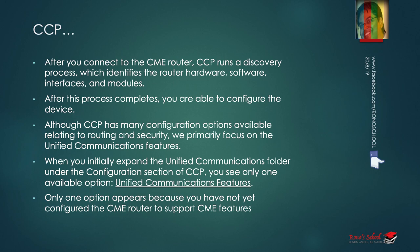Although CCP has many configuration options available relating to routing and security, the integrated GUI would not be able to do routing and switching configurations graphically. CCP will do routing and switching, but not telephony. Three differences: the integrated GUI via the TAR file is just for telephony — no ACL, no NAT. CCP can do both telephony and all routing and switching. CCP Express, the lighter version in the router flash, will do routing and switching but no telephony.